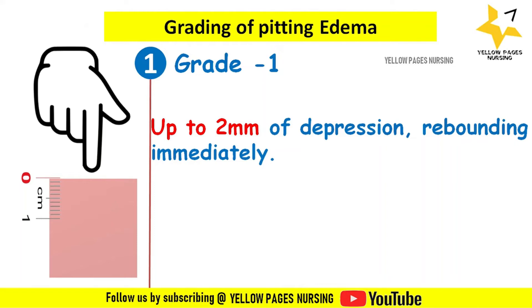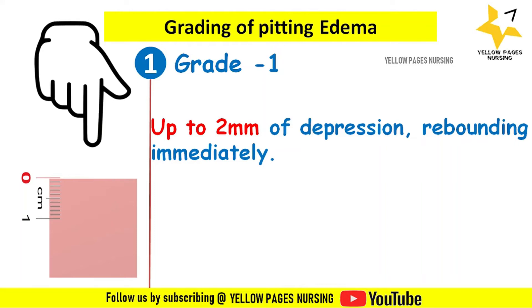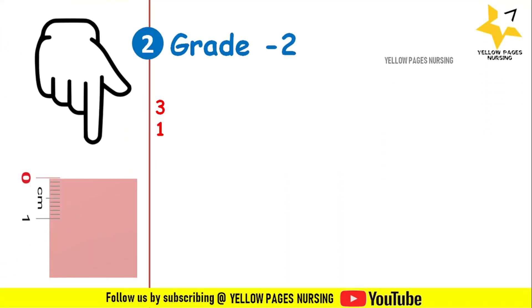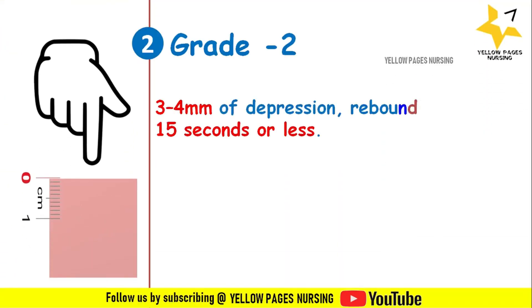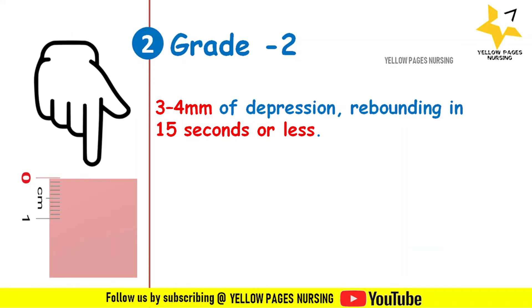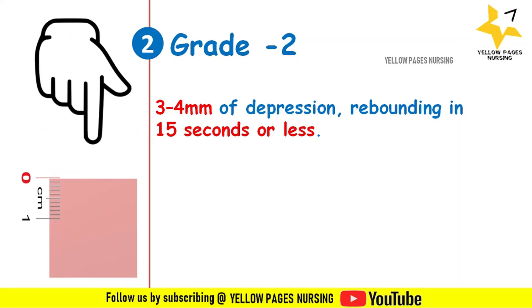In Grade 2, the depth of the pit is 3 to 4 millimeters of depression, which rebounds in 15 seconds or less.